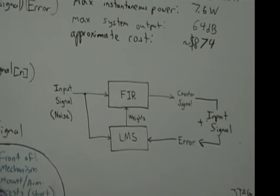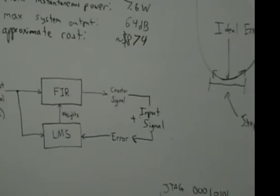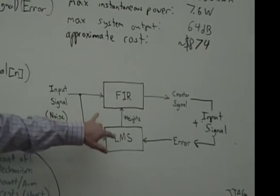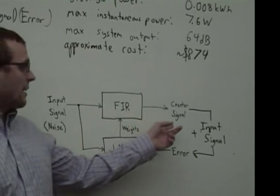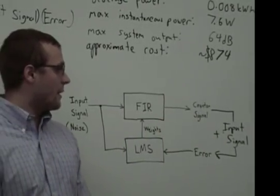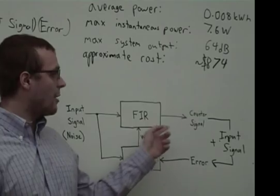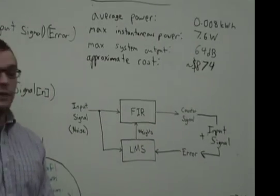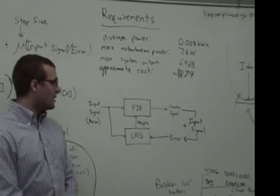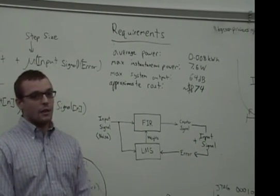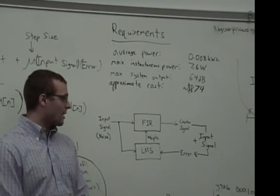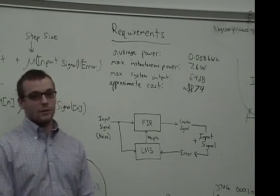The LMS produces the first round of weights for the FIR filter. The FIR filter then takes these weights from the LMS, uses them to produce a counter signal, and then the counter signal gets outputted into our system, into our headphones. In the environment, the counter signal and the addition of the input signal should produce something much quieter, but there will be some sort of result.